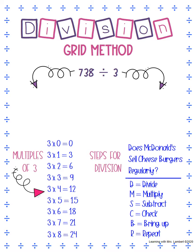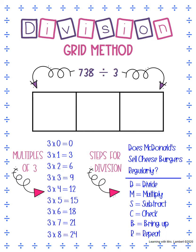Now that we have our multiples and our steps, we can go ahead and make our grid. The grid does look like an area model that you would set up, but remember division is the inverse of multiplication, so instead of putting our dividend on the outside of the box we're gonna put it on the inside.